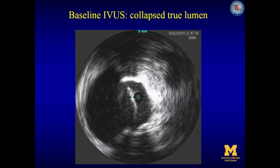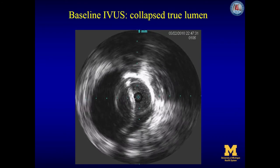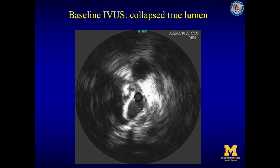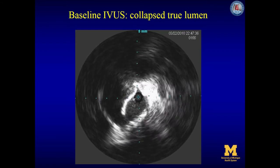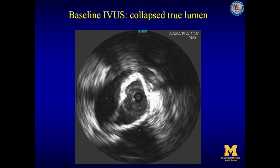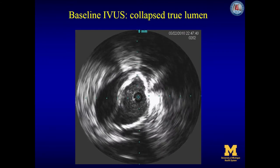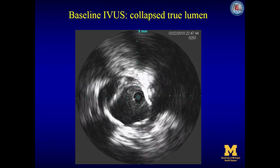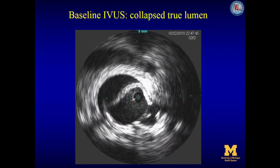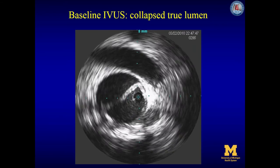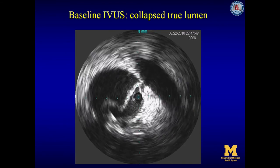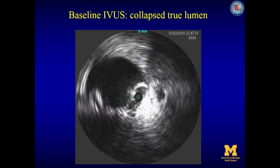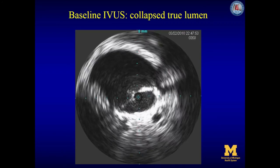The celiac artery is coming off at 12 o'clock with the collapsed true lumen. The superior mesenteric artery is coming off at 12 to 12:30 from the collapsed true lumen. The left renal artery is coming off at the right side of the screen, with the renal vein crossing the front of the area. Here we are in the infrarenal aorta with collapsed true lumen.